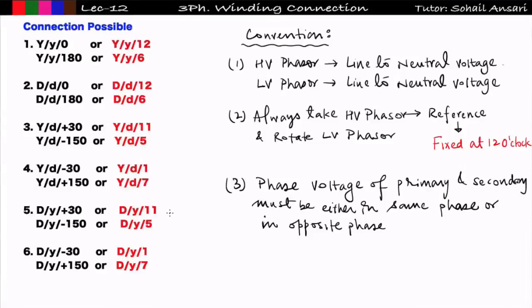Hi guys, welcome to Getmatic. In the previous lecture we have seen how to draw the phasor diagram of YD+30 and YD-150, also known in clock form as YD11 and YD5. Now in this lecture we will start a new connection — YD-30 and YD+150, that is how to make YD1 and YD7.